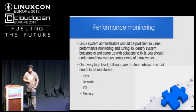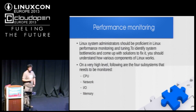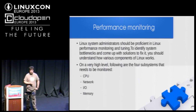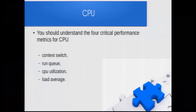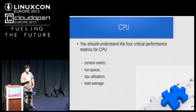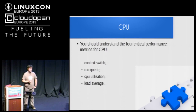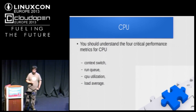On a very high level, the following four subsystems need to be monitored: CPU, network, I/O, and memory. When talking about CPU, you should understand the four critical performance metrics: context switch, run queue, CPU utilization, and load average. Everyone has heard about CPU utilization and load average, but maybe not about context switch and run queue.